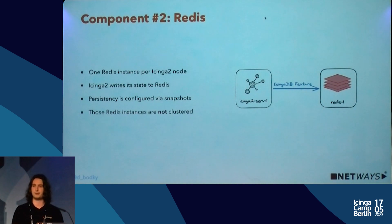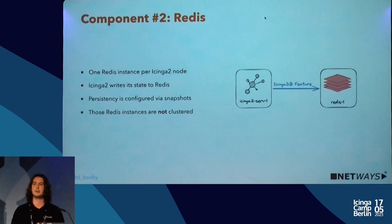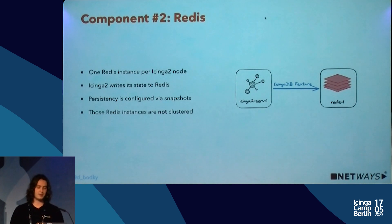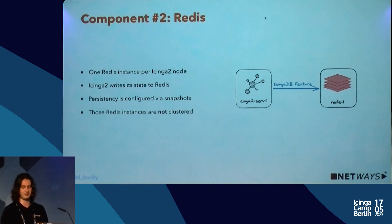Persistence in Redis is configured via snapshots: if the state inside Redis changes within a given interval, Redis takes snapshots and writes them to disk. We always have to keep in mind that persistence can become cumbersome in high available setups. Also important: those Redis instances are not clustered — they don't talk to each other, they're just standalone instances. You could provide one cluster per node, but that might be overkill.